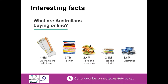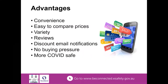On screen you can also see the types of things people are buying — entertainment, leisure, fashion, food. In fact, that's everything. People are buying houses and cars online, holidays, all sorts of things. Everything is available online now. You just need to be confident that you're buying in the right place and using things properly — and that's what we'll be sharing with you today.